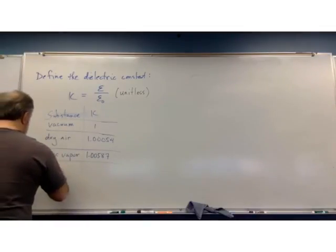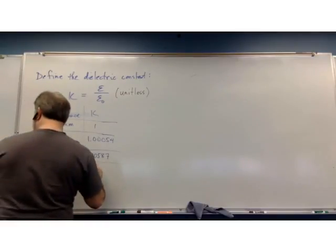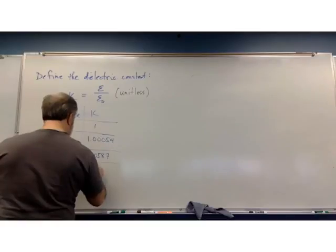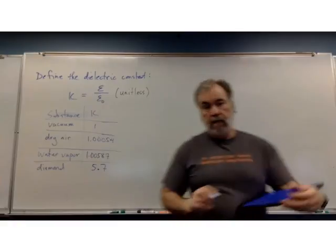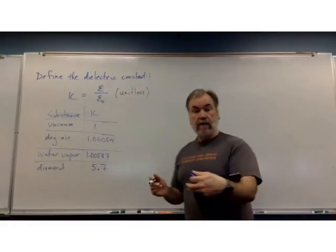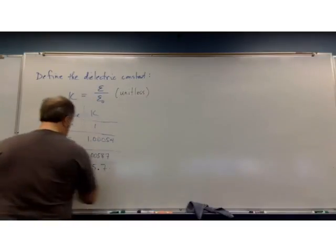Here's one, though. Diamond. Very, very good insulator. Its dielectric constant is 5.7. So five, almost six times the permittivity of vacuum.